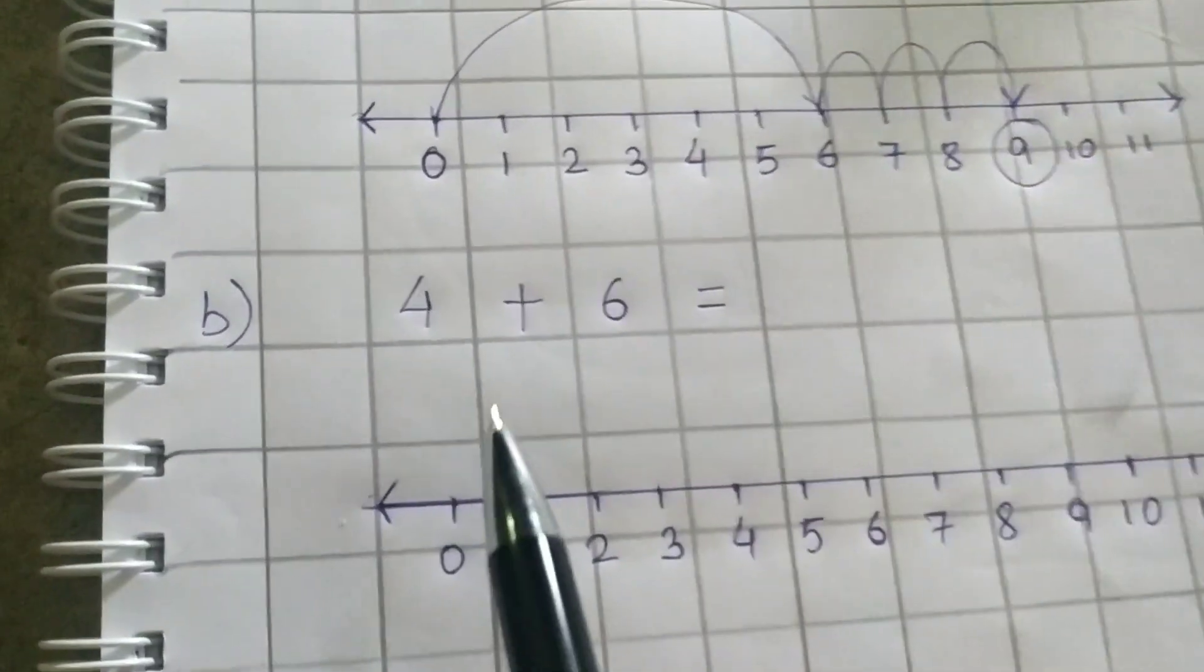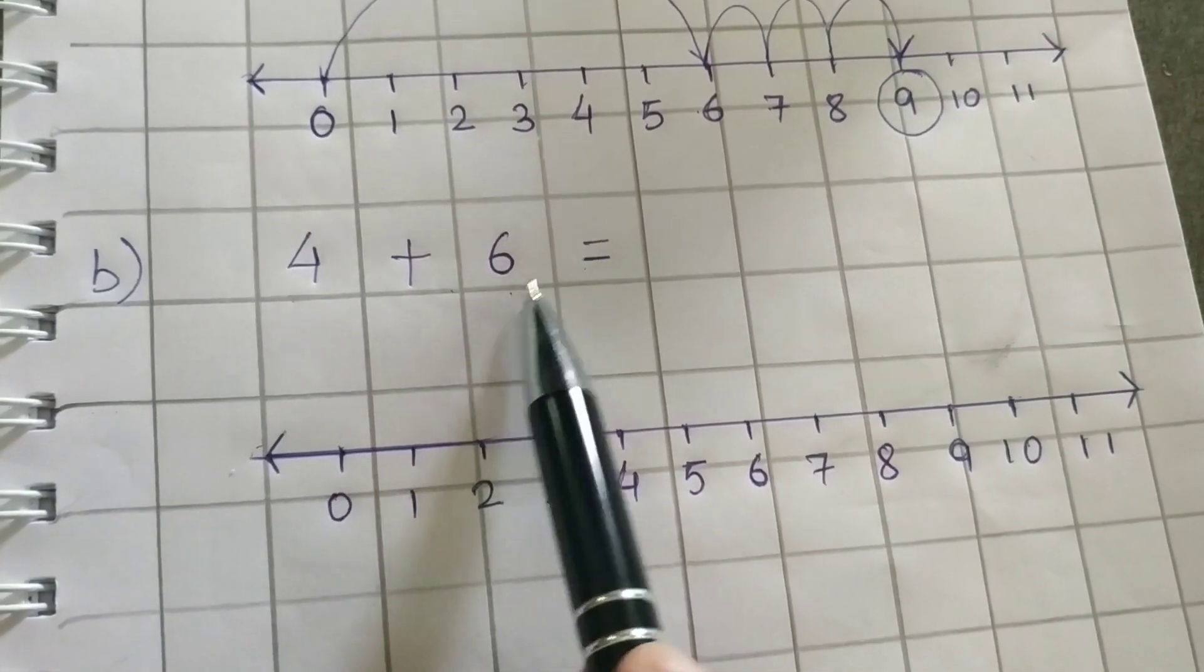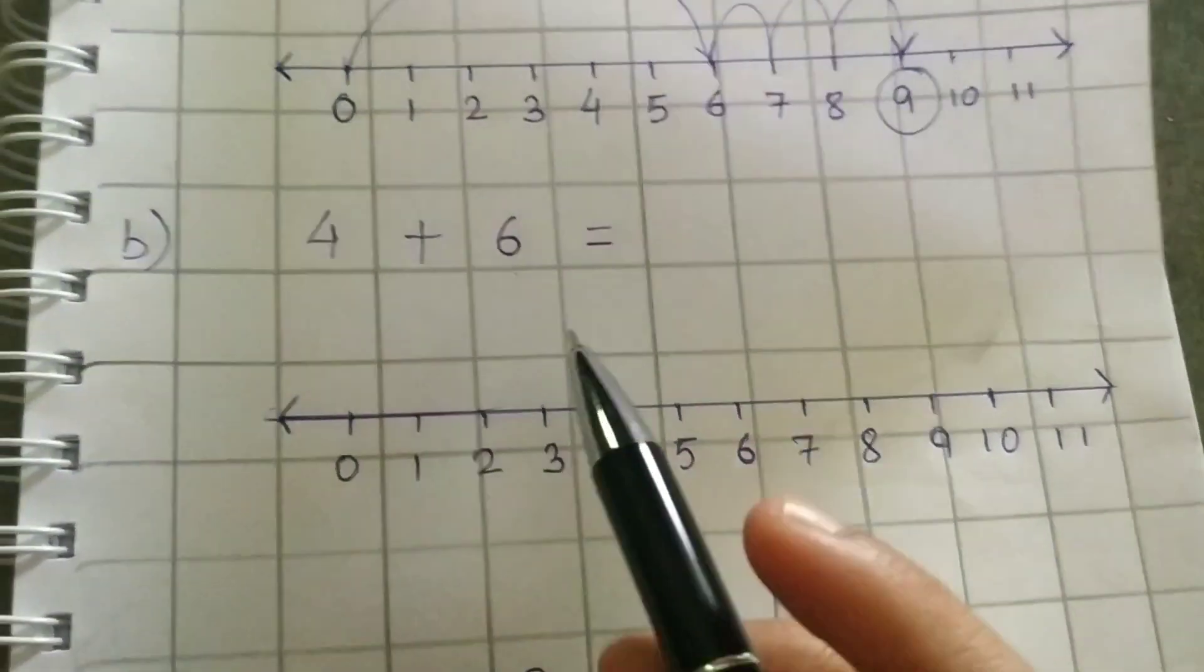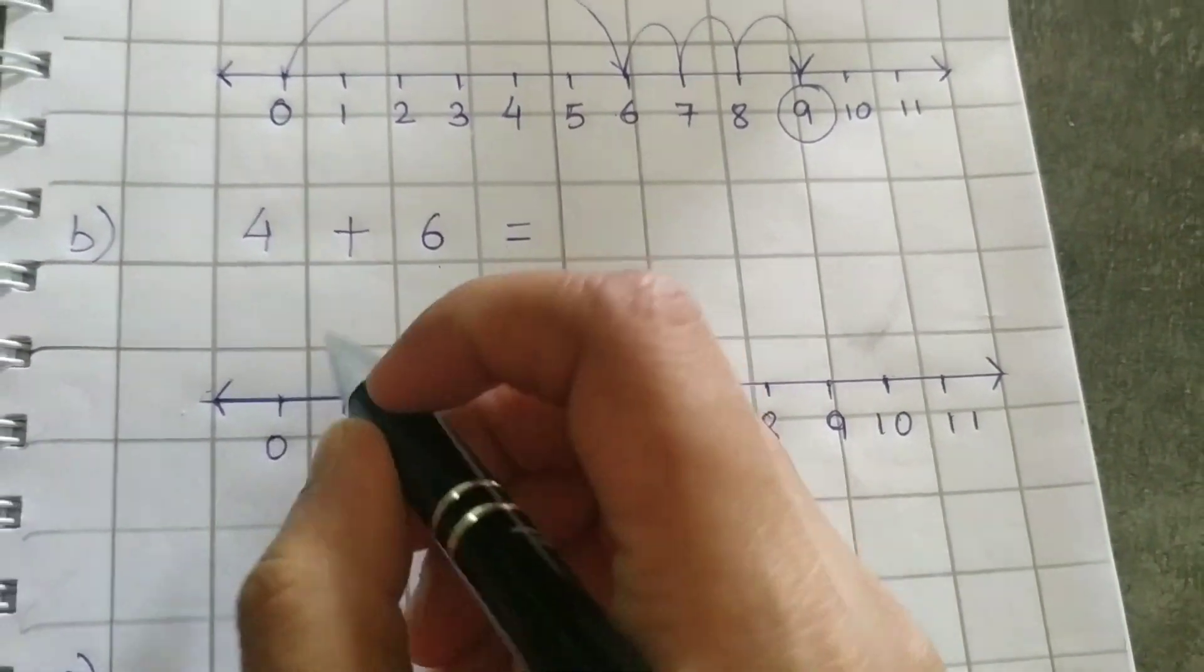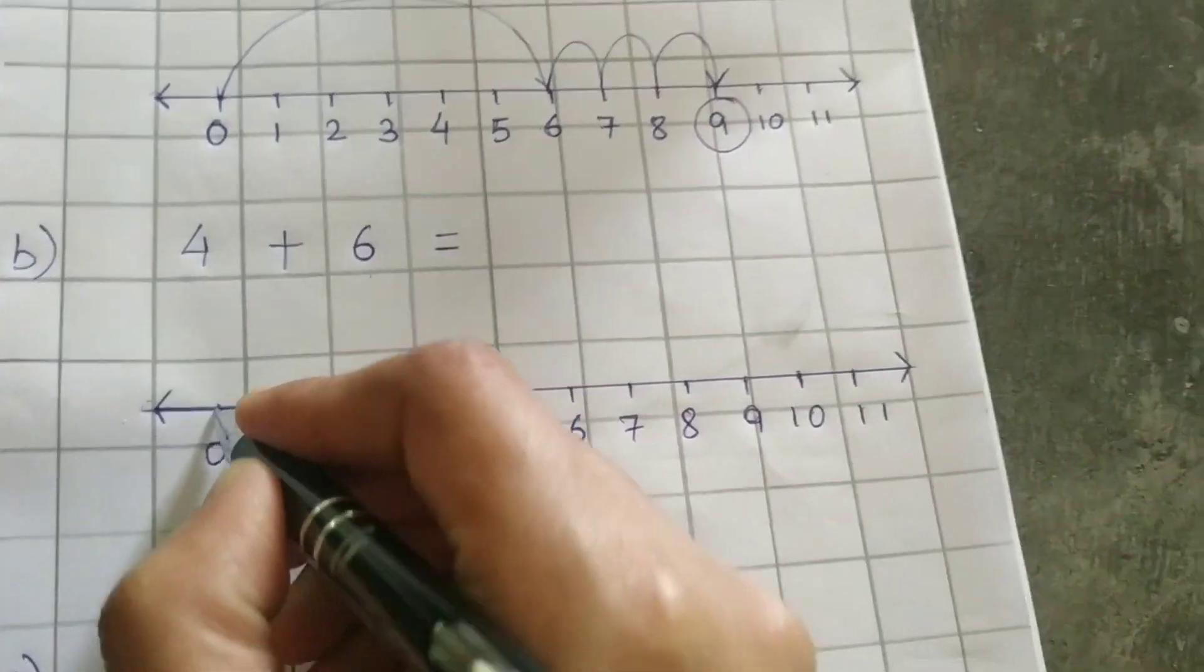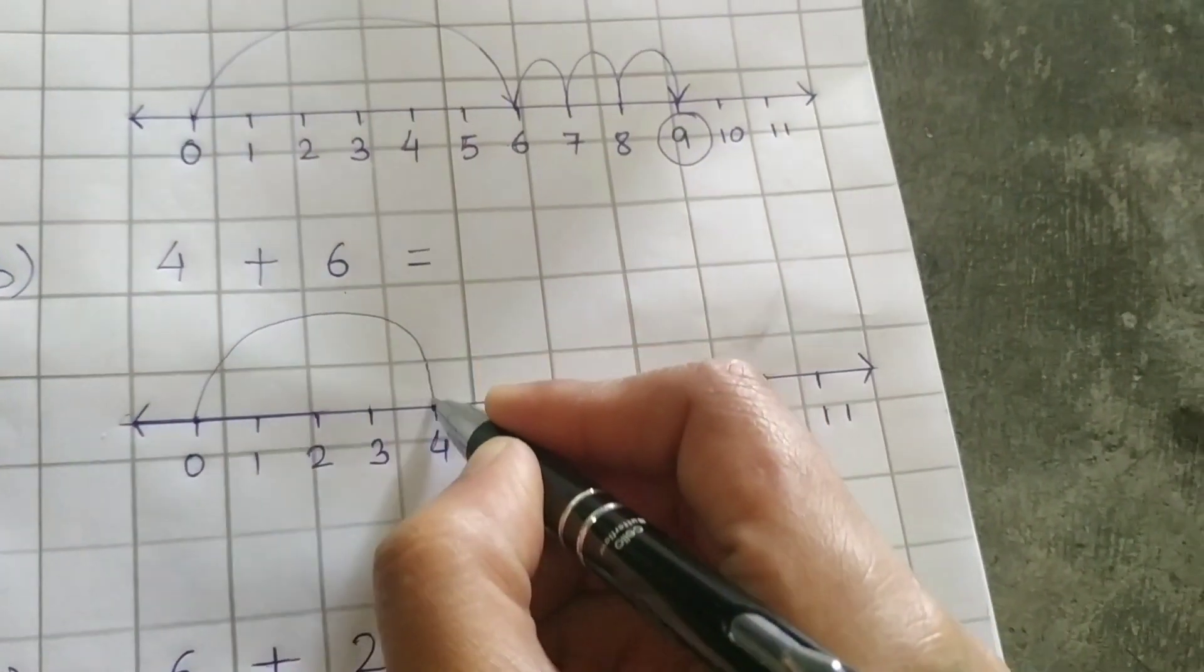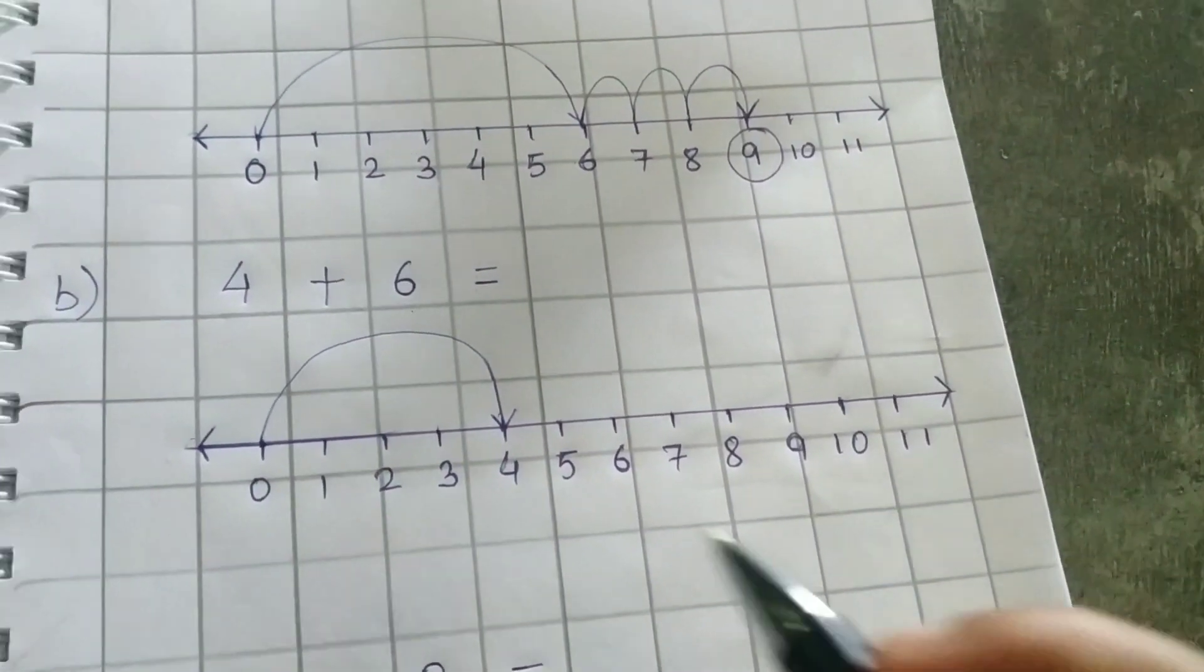Now the next one. Next is 4 plus 6 equals to? We don't know. Let's start. Starts from 0. 0 to what? First number is what? 4. So 0 to 4. Jump 0 to 4. Keep a little arrow like this.